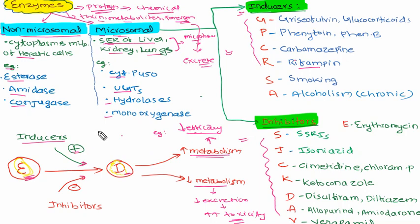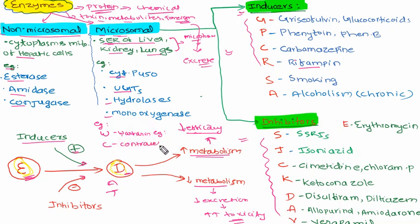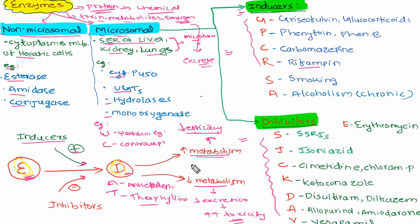To remember the common group of drugs which are usually induced or inhibited, we use the mnemonic WILD CAT. W stands for warfarin, C stands for contraceptive pills, A stands for anti-epileptic drugs, and T stands for theophylline. These are the drugs whose metabolism is commonly affected by enzyme inducers or inhibitors.